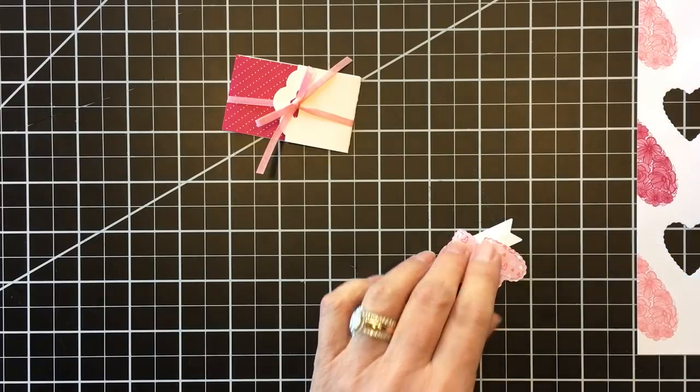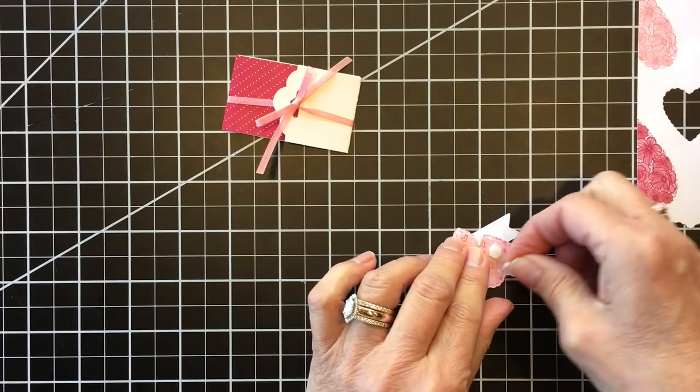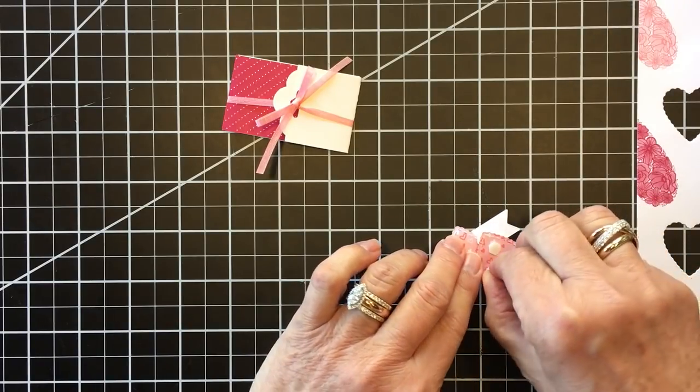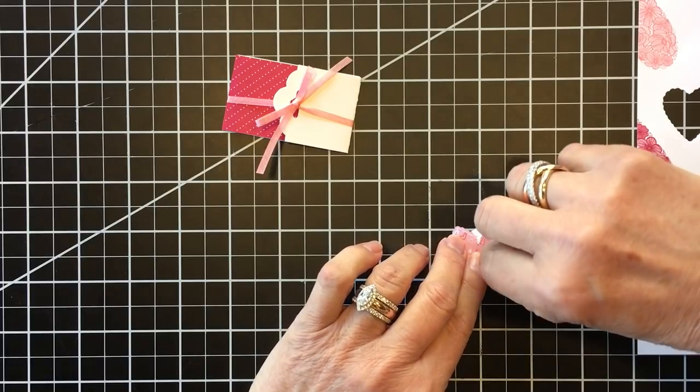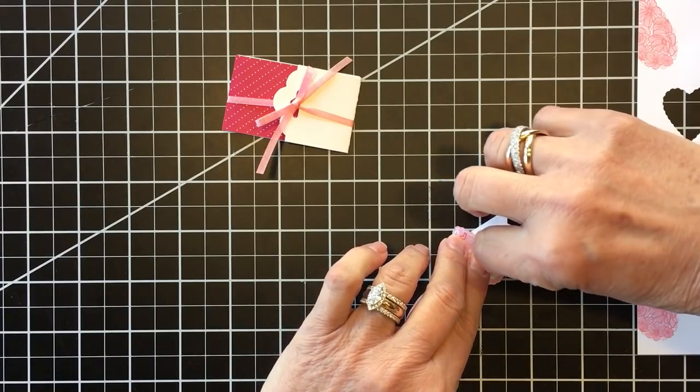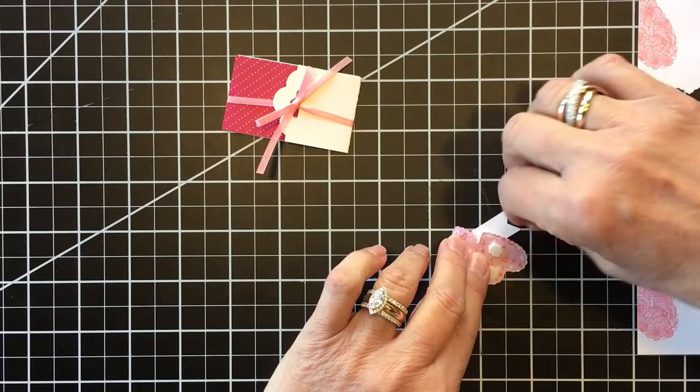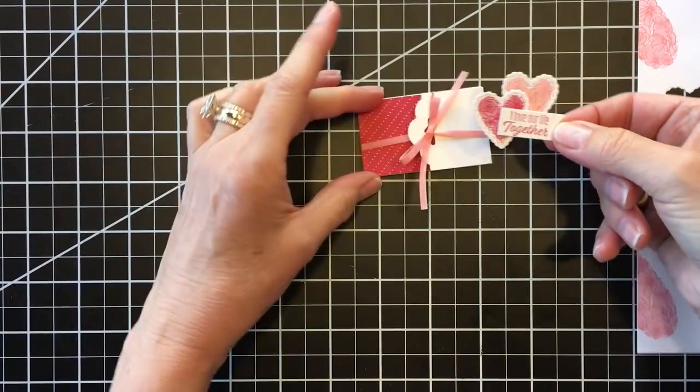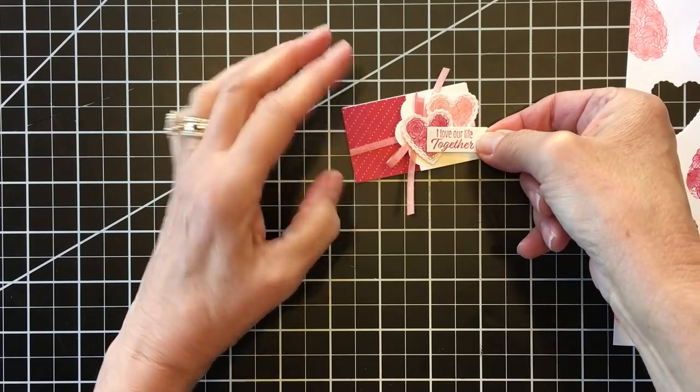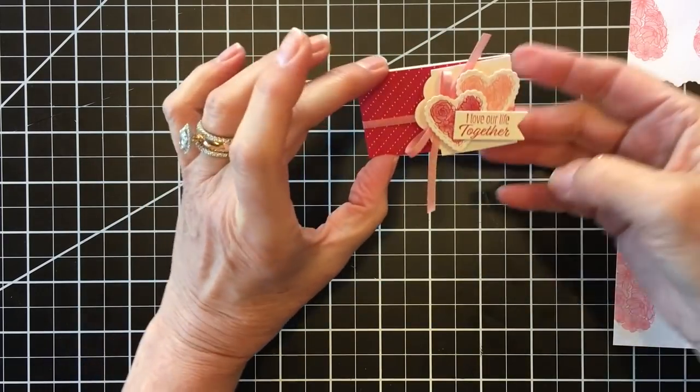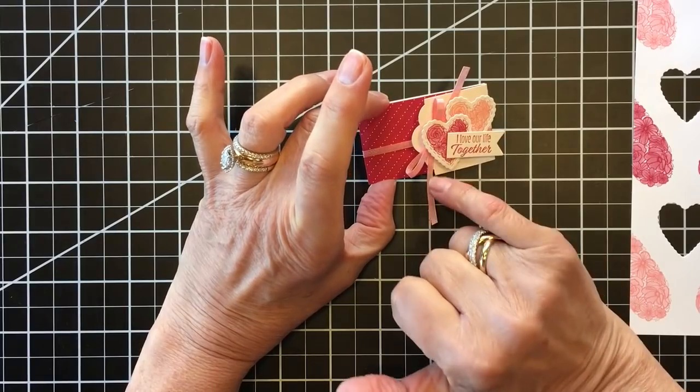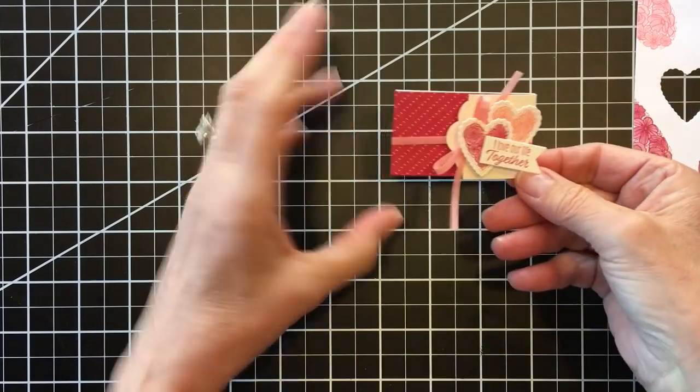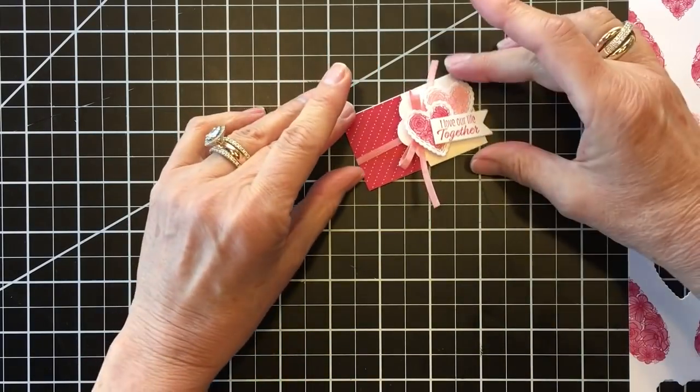So I'm just going to put some mini dimensionals on here, put it on the back, and we are going to be done. So this one was really easy because I didn't stamp the hearts but I think it's cute. And this is the one I loved, how I love our life together, and it has the two hearts which I thought was pretty sweet and sentimental.